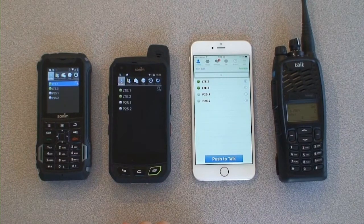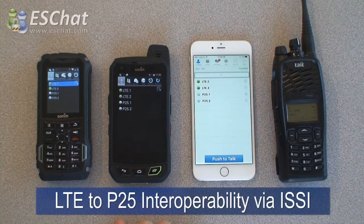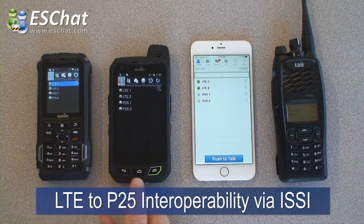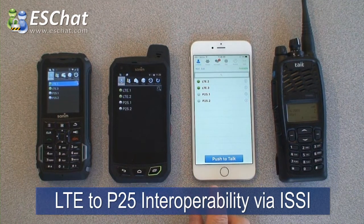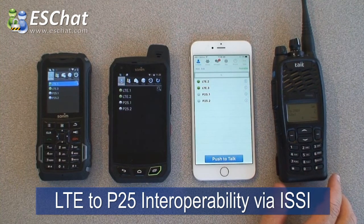This is a demonstration of interoperability between ESChat and P25 via an ISSI interface. For this demonstration we have a Sonim XP5, a Sonim XP7, an iPhone 6 Plus, and a Tate radio which is connected as part of a Tate P25 Phase 2 trunking system.